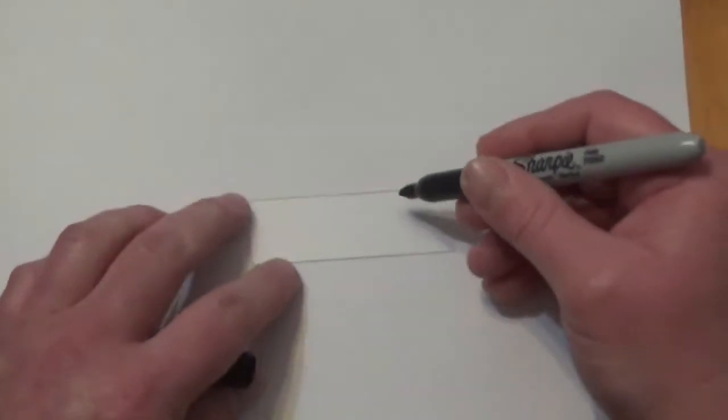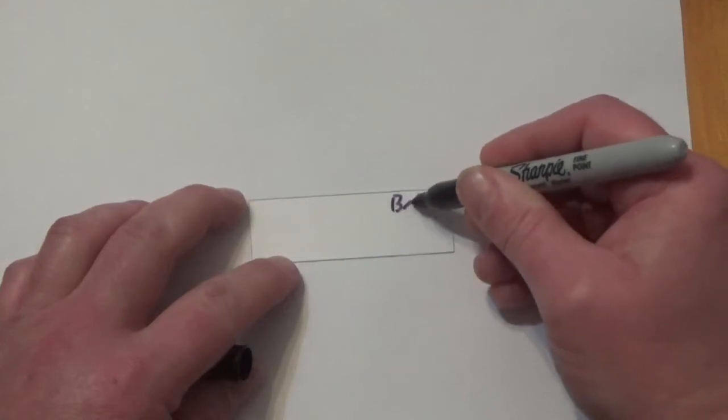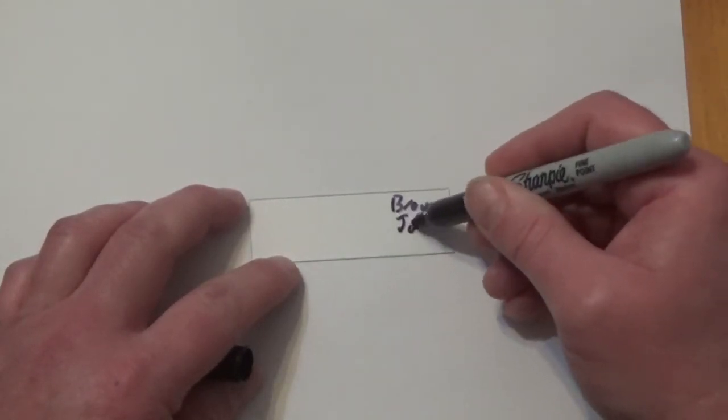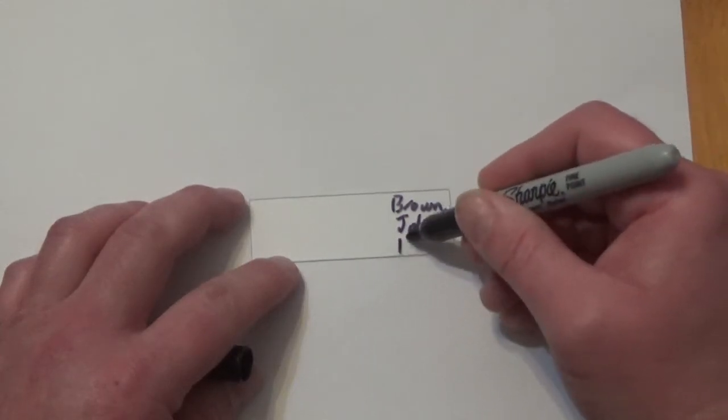We're going to use a clean surface and a clean microscope slide, which we're going to label. We'll be testing my hair and my dog, Snoopy, so we'll just label this Brown John, and I'm human.